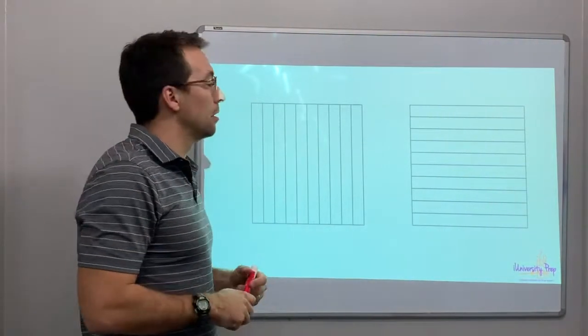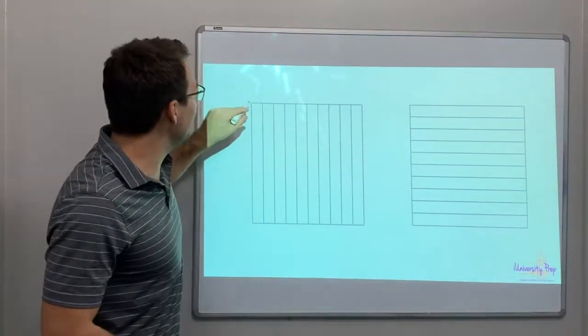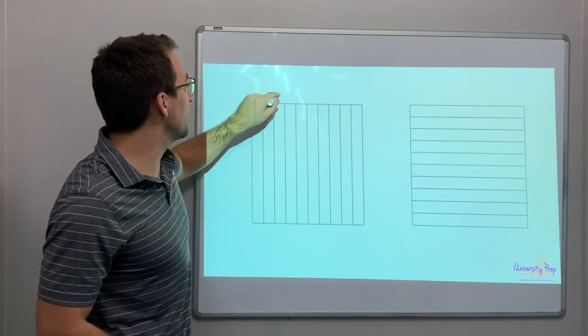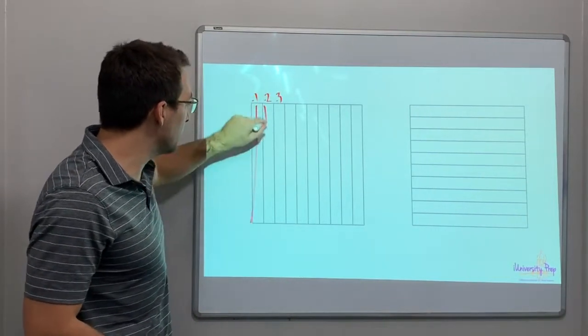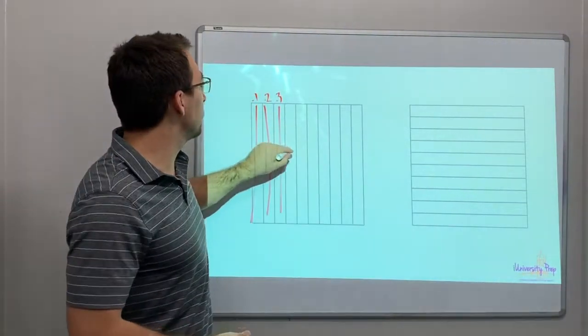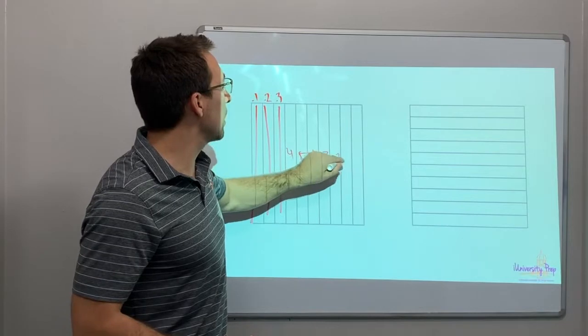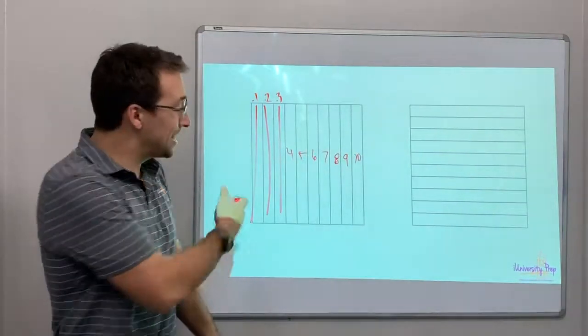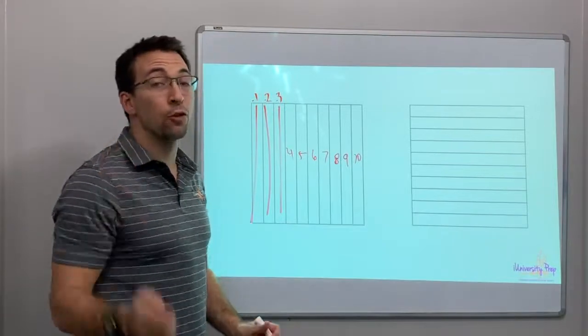You get ten dimes. So this is one tenth, two tenths, three tenths, right? This whole column. Four tenths, five, all the way to four, five, six, seven, eight, nine, ten. Right? You have ten dimes equals one full dollar.